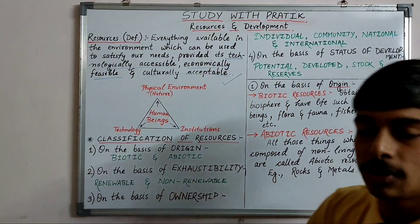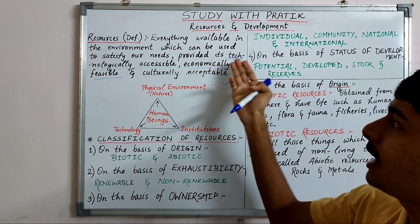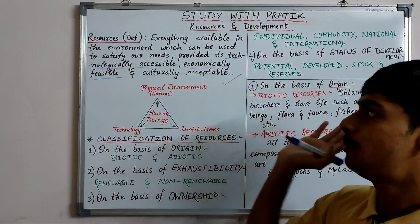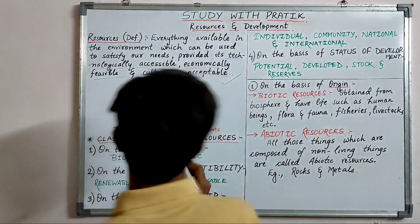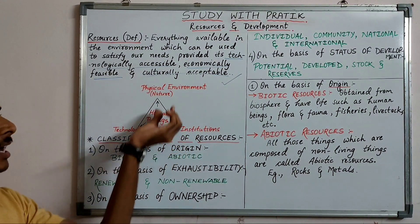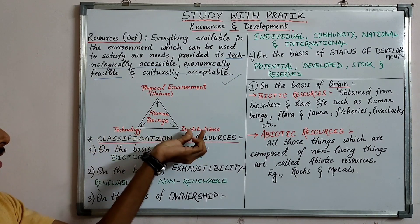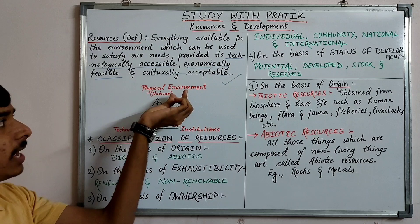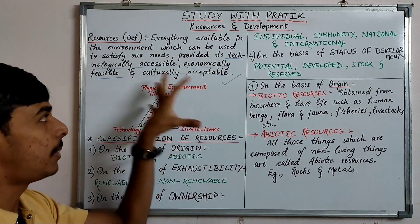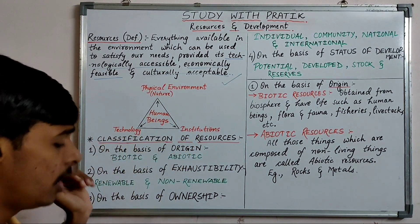So resources is everything available in our environment that is technologically accessible, economically feasible, and culturally acceptable. Human beings are dependent on three things — technology, institutions, and the physical environment — all of which are interlinked.